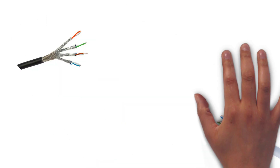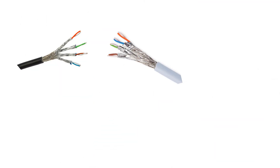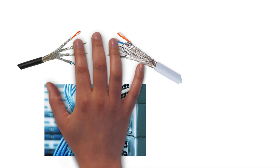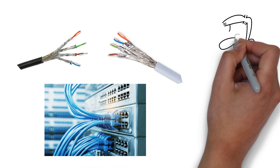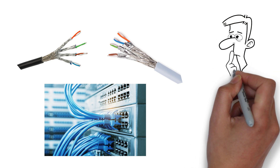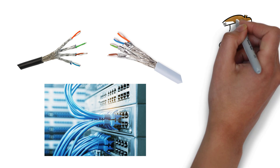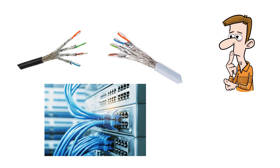CAT7 and CAT8 are both types of Ethernet cable used to connect devices in a wired network. While they serve the same purpose, there are several key differences. In this video, we're going to have a look at what those differences are.